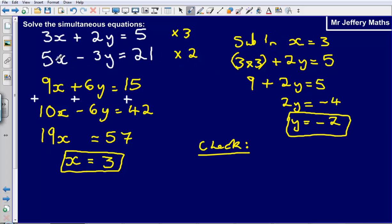So we have not used 5x minus 3y equals 21 with both of these values. Let us just check that if we substitute x and y into this equation we get an answer of 21.